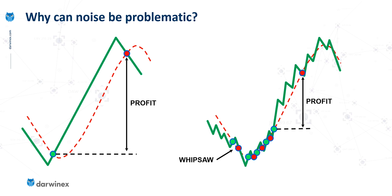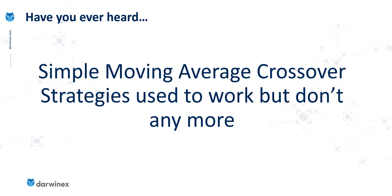You may have heard or read that simple moving average crossover strategies used to work well, but they don't work well anymore. Why is this? Typically, markets have become noisier, and they've become noisier because participation in those markets has increased — there are now more traders than ever, and that increased participation manifests itself in much noisier price action. The same deterioration in profitability also applies if you use a dual moving average crossover, because that noisy price action causes the shorter-term moving average to cross above and below the longer-term moving average much more often as well. And that's just one reason why systems that used to work don't work anymore.